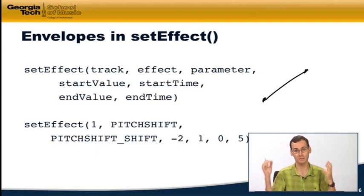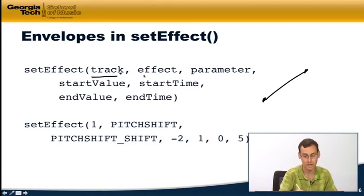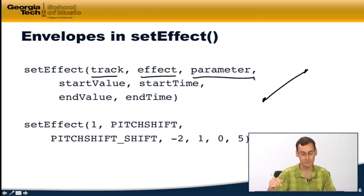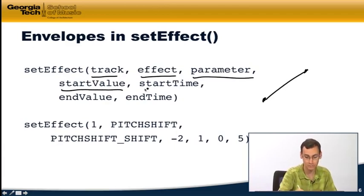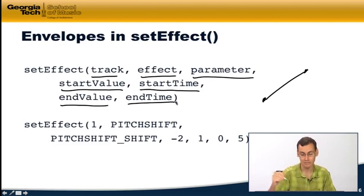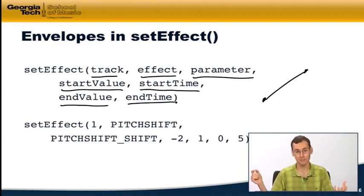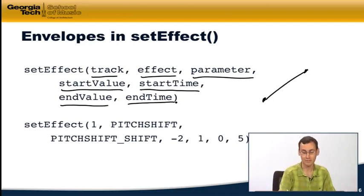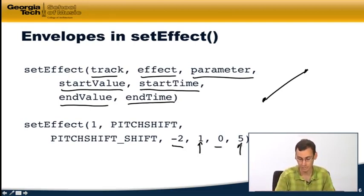Each of these ramps, from a starting point and value to an ending point and value, is defined by a single call to setEffect. So if I want to do these more complicated ramps, I just call setEffect a bunch of times. It starts off the same way with the track, the effect name, and the parameter name, and then I just give it the values for these two points: what is my starting value, what is the starting time, what is the ending value, and what is the ending time. So as an example, if I wanted to do a glissando with my pitch shift to have it change gradually over time, I can say I want it to start at negative two semitones in measure one and then go up to zero semitones, the original pitch, by the time we get to measure five.